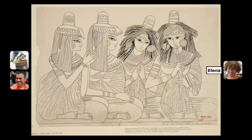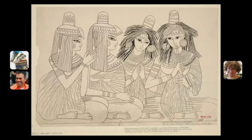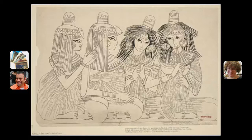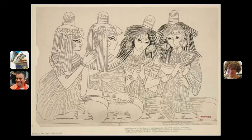As you make comments on the image, you can use your mouse to doodle and draw attention to what you are talking about. For instance, in this picture, the Egyptian girls have a cone-shaped object on their heads. As you talk about this, you can draw a circle around it like so.